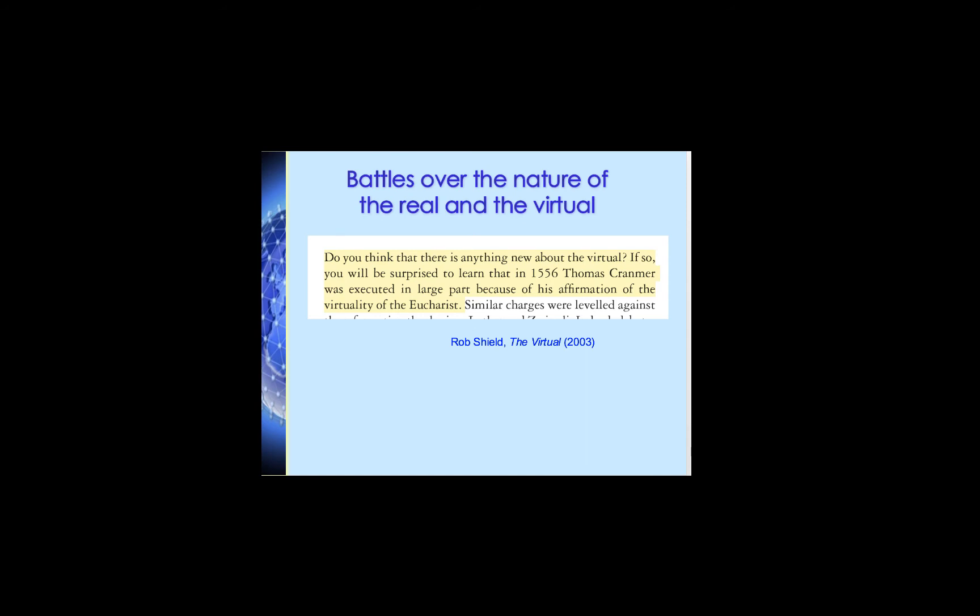This created a series of battles over the nature of the real and the virtual. Rob Shields accounts for this in his famous book The Virtual, written in 2003 — we have e-copies in the library through OneSearch. He begins with a history of virtuality and reality and says: do you think there's anything new about the virtual? If so, you'll be surprised to learn that in 1556, Thomas Cranmer was executed in large part because of his affirmation of the virtuality of the Eucharist.